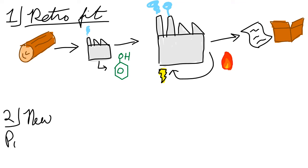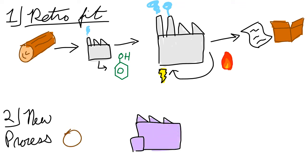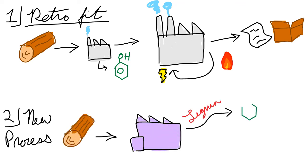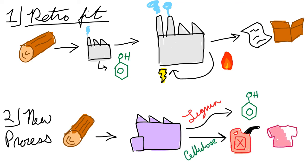The second way would be to create a whole new process. This process would target the lignin as one of the primary products instead of treating it as a byproduct. Unfortunately, these types of processes tend not to make cellulose that is suitable for paper products, and so the sugar stream would have to be converted to fuels or base chemicals as well, which are often less valuable than paper. There is currently a lot of research being investigated on all of these fronts in order to make chemicals from lignin a reality, and I feel the future is bright. Thank you for watching, and I hope you have learned something new.